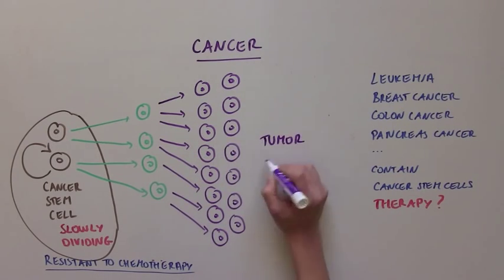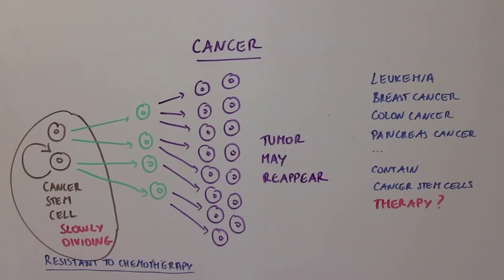So to treat these types of cancers, it would be ideal to kill both the cells that compose the mass of the tumor, as well as the cancer stem cells that fuel the tumor volume.